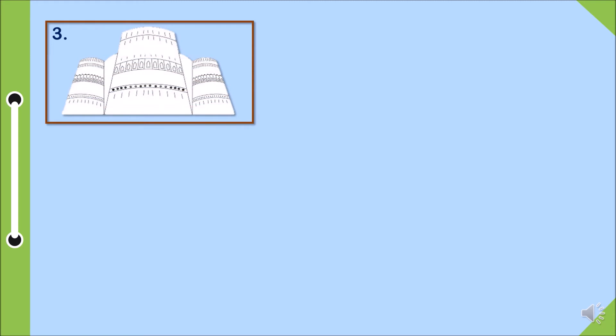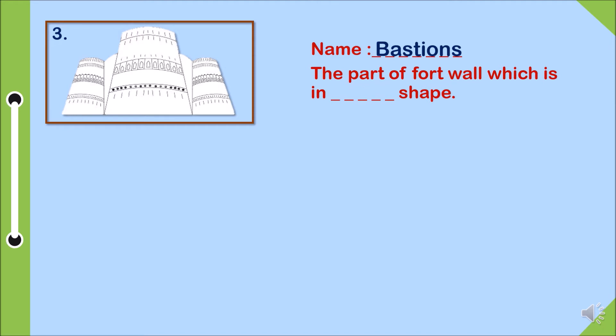Number three, name the part of fort wall which is in blank shape. Answer: bastion is the part of fort wall which is in round shape.